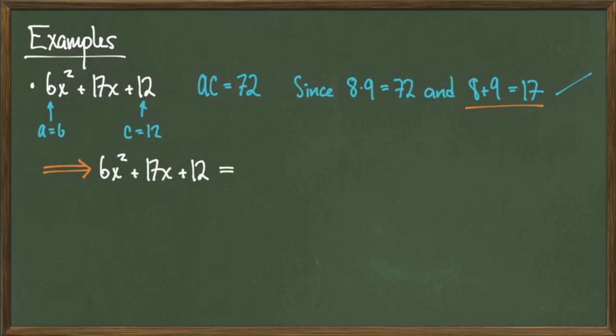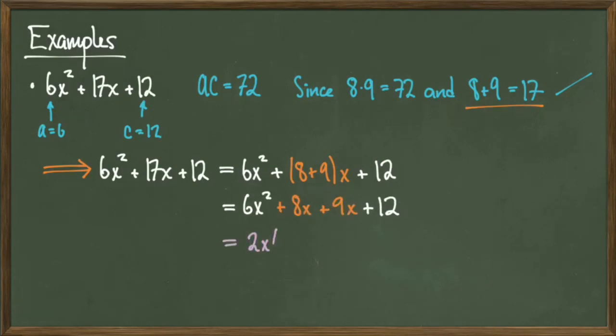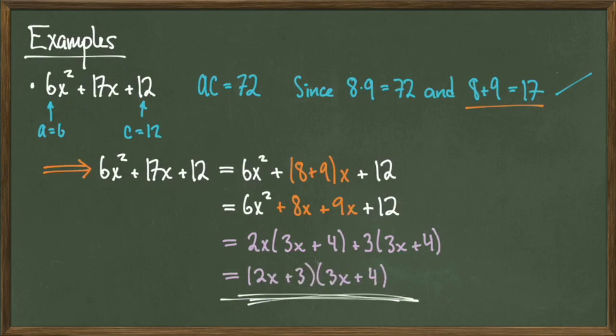Go to step 2 and replace 17 with 8 plus 9. This then simplifies to 6x squared plus 8x plus 9x plus 12, which we can then factor by grouping to get a final answer of 2x plus 3 times 3x plus 4.